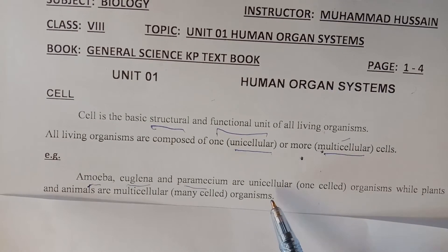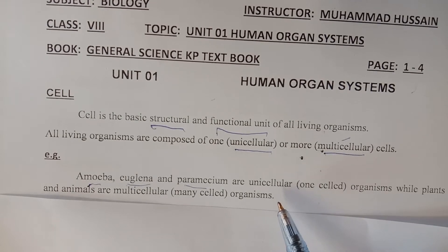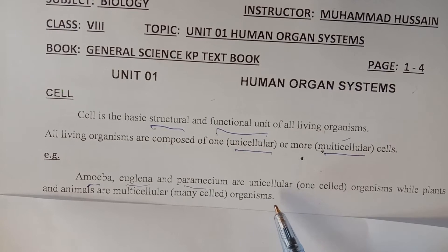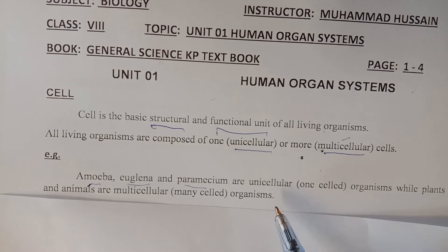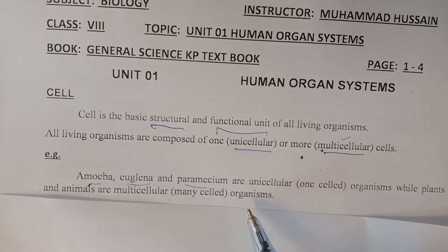Cells containing a single cell are called unicellular. Organisms made of tissues, organs, and organ systems that form a complex body are called multicellular organisms.